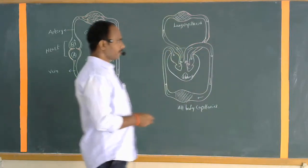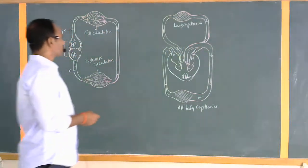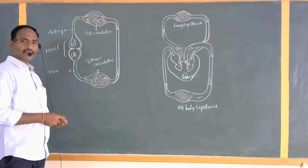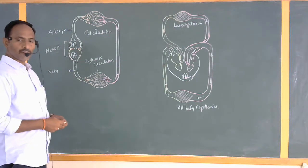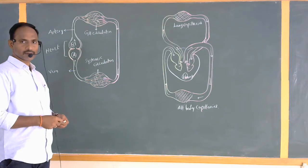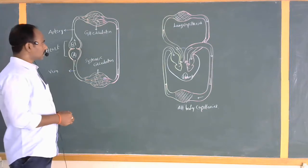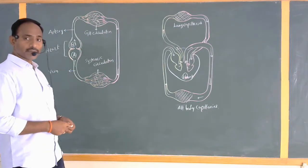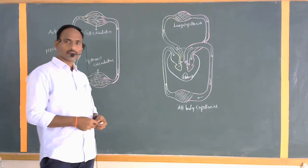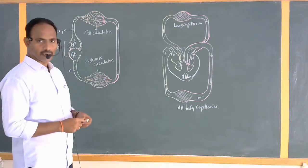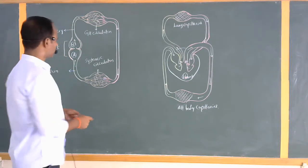Today in this topic, we discuss how the blood is transported to the different parts of the body in total vertebrates. That can be assessed by two kinds of circulations: single circulation and double circulation.